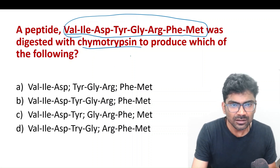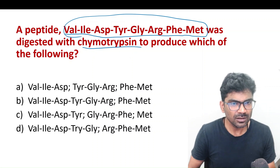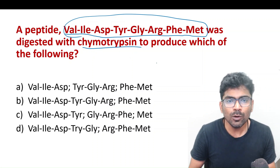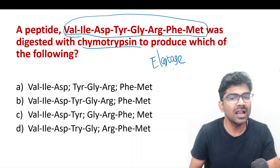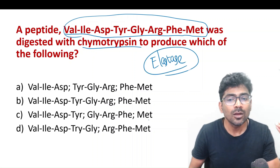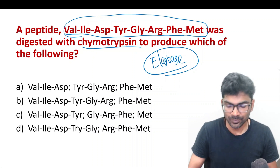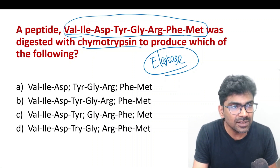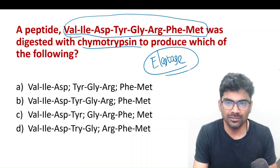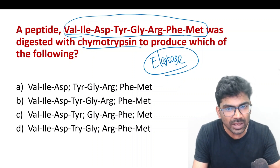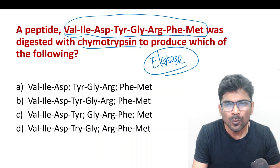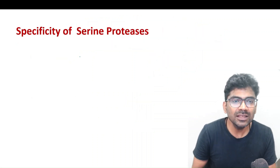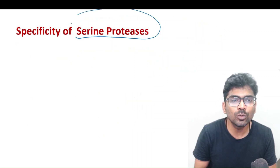In the questions, there is trypsin, chymotrypsin, and one more enzyme called elastase. What are these three enzymes? These three enzymes are digestive enzymes. They are going to act on protein, so they are proteases. What else is common? These are serine proteases.